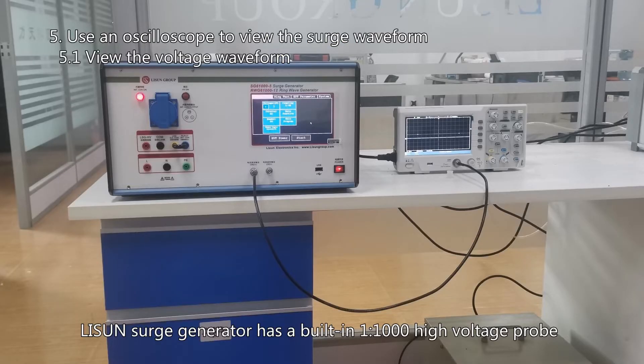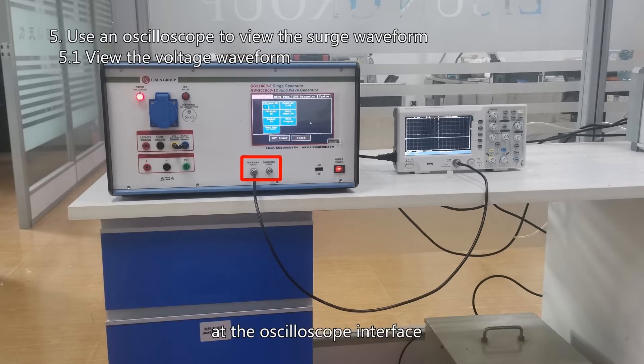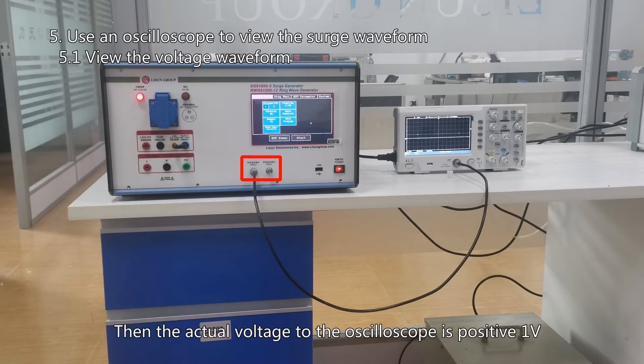The surge generator has a built-in 1 to 1000 high-voltage probe at the oscilloscope interface. Set the surge voltage to positive 1 kV, then the actual voltage to the oscilloscope is positive 1 V.